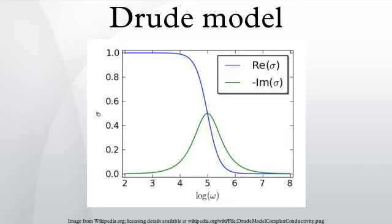Here the Drude model is applied to electrons. It can be applied both to electrons and holes, that is, positive charge carriers in semiconductors. The curves for σ(ω) are shown in the graph.